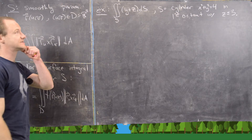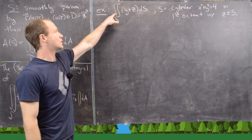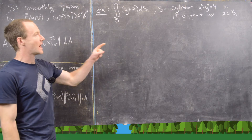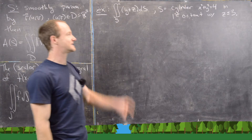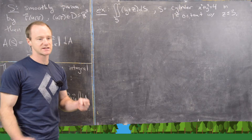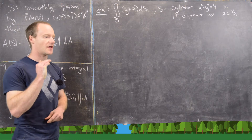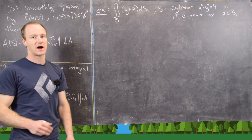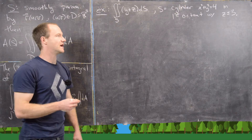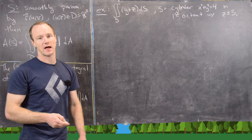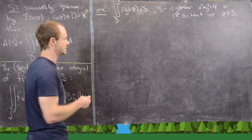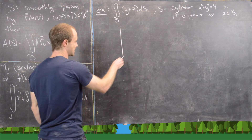For our example, we want to compute the surface integral of y + z, where our surface is the cylinder x² + y² = 4 in the first octant. That means all x, y, and z values are positive, and we also want it below — less than or equal to — the z = 3 plane.